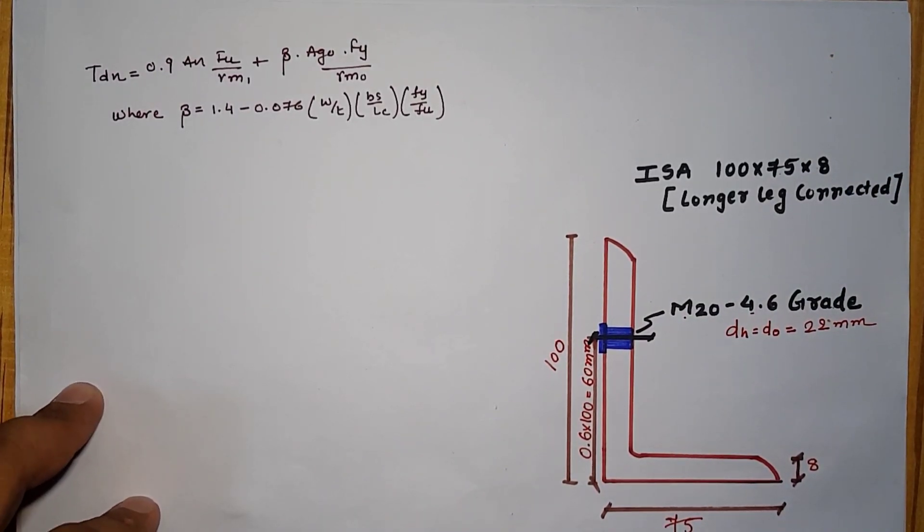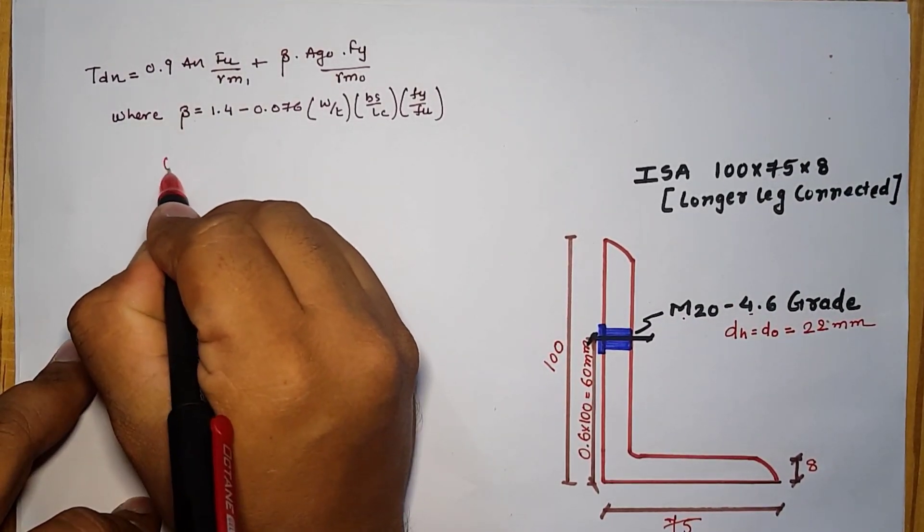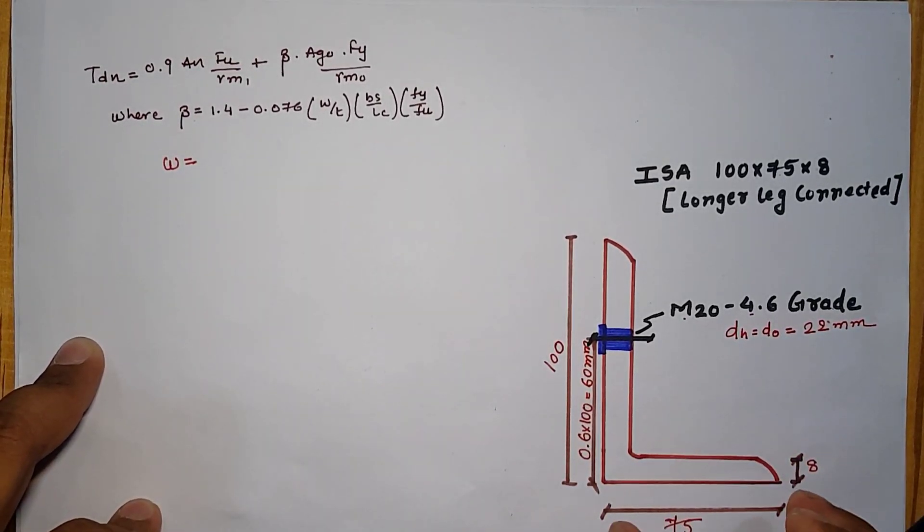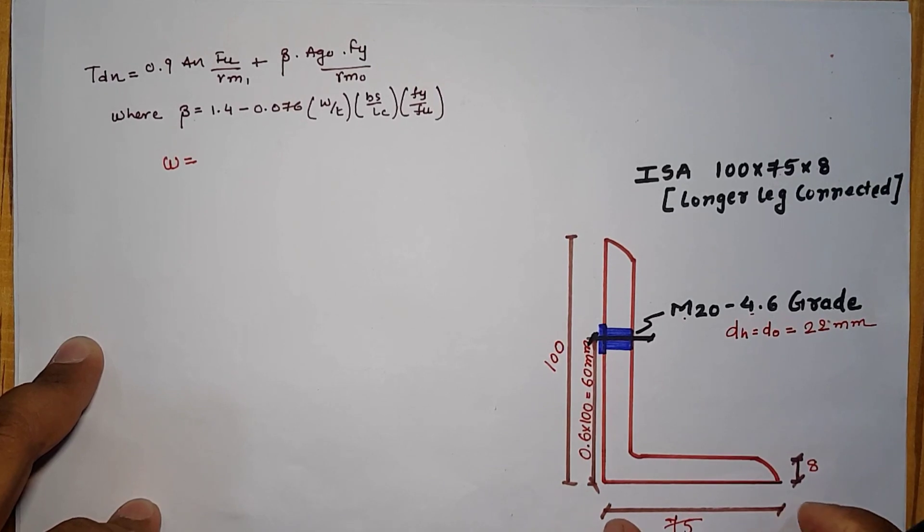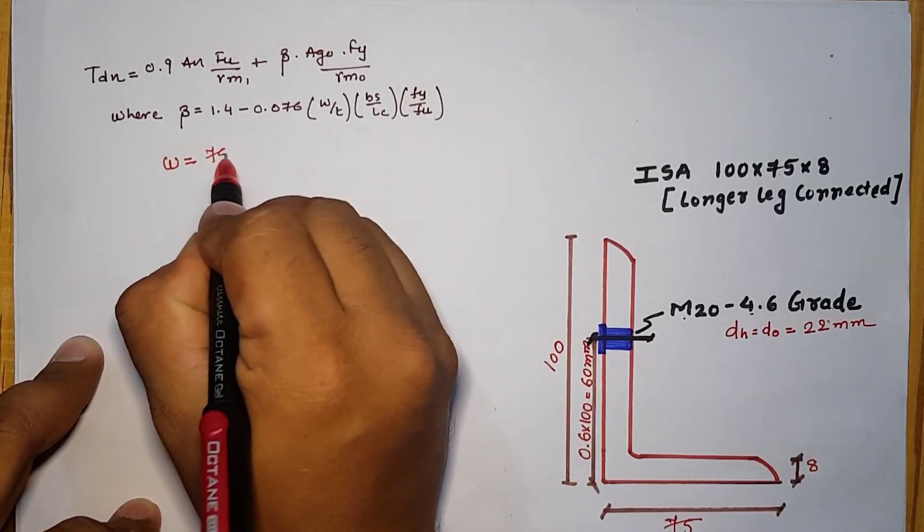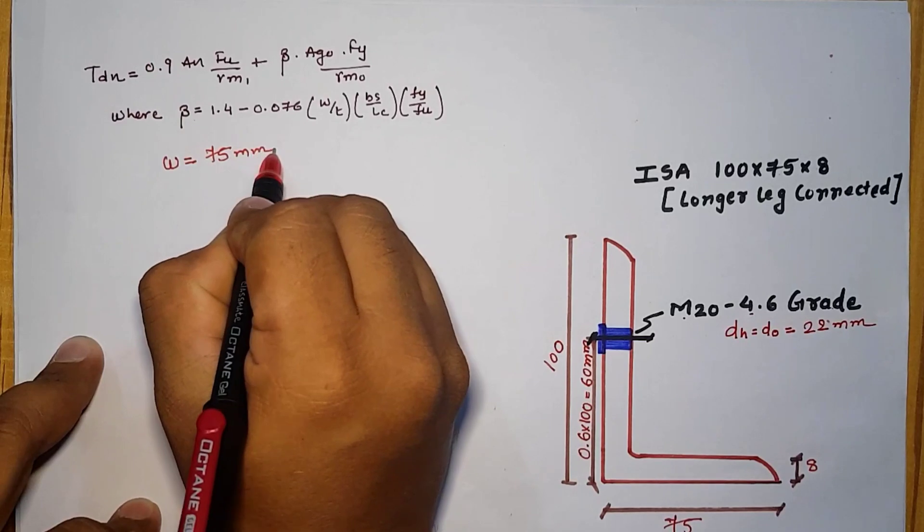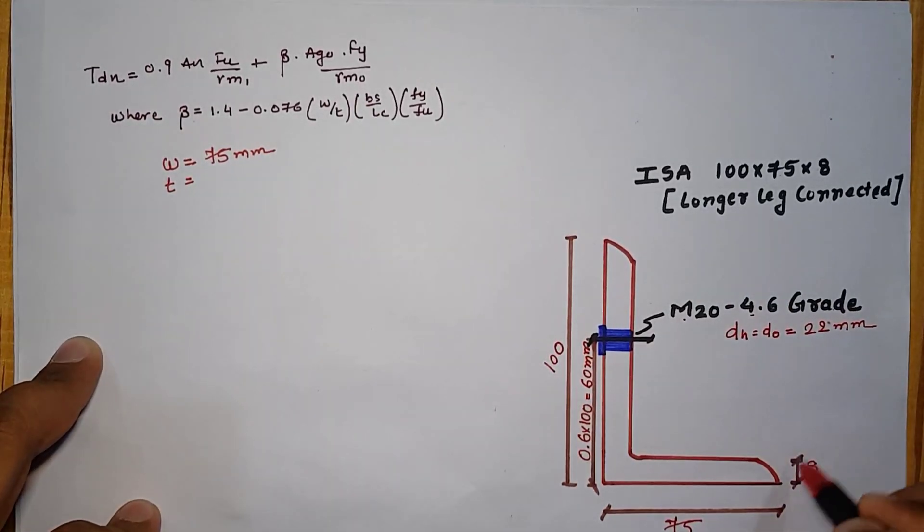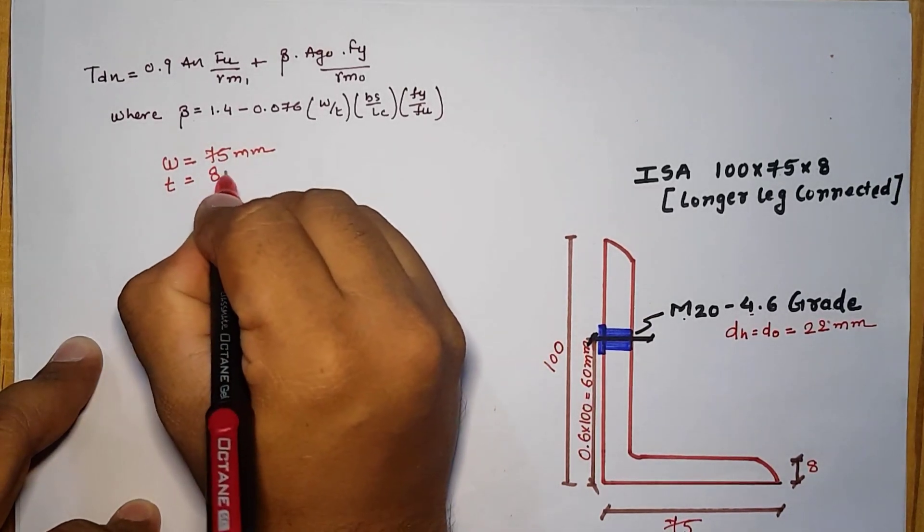Let us go with the terminology. For beta calculation, first of all W. We know that W means the leg which is not connected, it means that our 75 mm width is for W. Second part is T, thickness of the section which is equal to 8 mm.